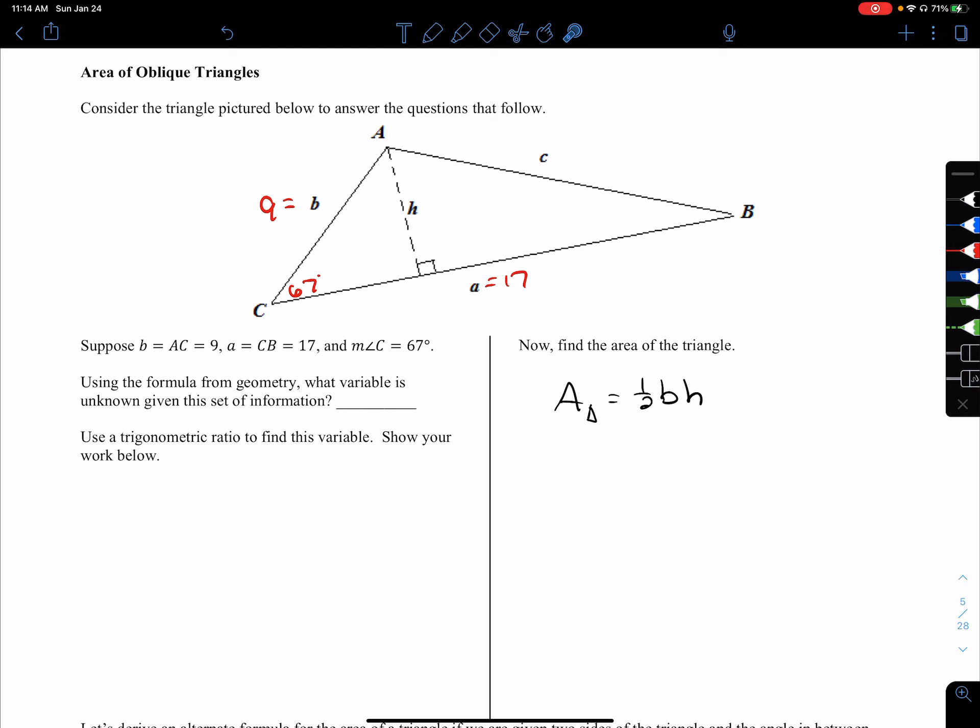Using the formula from geometry, what variable is unknown? We do not know the height h. Is there a way to figure this out using right-angle trig? If we focus on this right triangle and the 67 degrees, we have the opposite leg we're trying to find, and we know the hypotenuse. So if we say sine of 67 degrees equals the opposite leg over the hypotenuse, we would find that the height is 9 sine of 67 degrees. 67 is the included angle, and 9 is one of the sides including that angle.